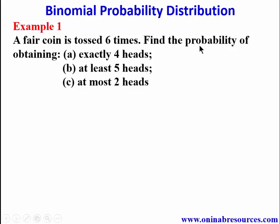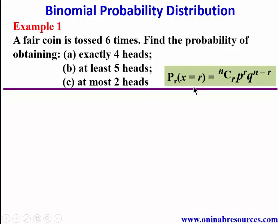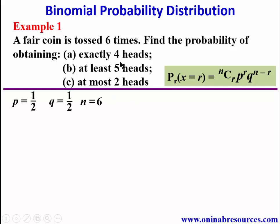Example one: a fair coin is tossed six times. Find the probability of obtaining: a) exactly four heads, b) at least five heads, and c) at most two heads. In our solution, we identify the parameters for the binomial formula. The probability of success — getting a head — is p = 1/2, and the probability of failure is q = 1/2. The number of tosses is n = 6, and for part a, r = 4.